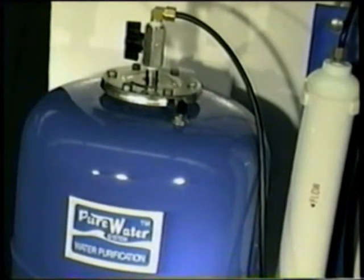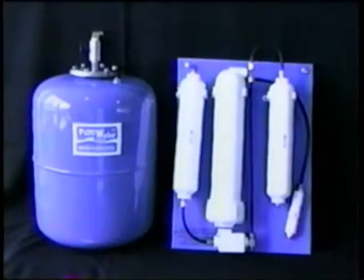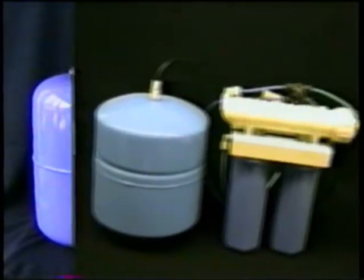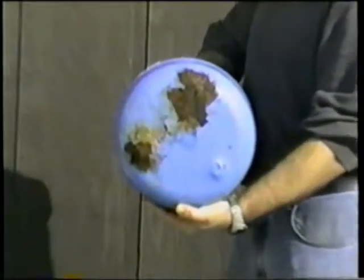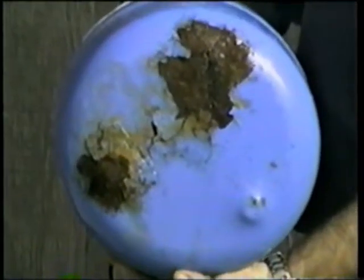Pure Water Systems tanks have a durable baked on epoxy finish, just like a kitchen sink. They're designed to give you a lifetime of trouble-free service. Generic system tanks almost always have less durable spray painted finishes which are more likely to scratch, pit, and rust, shortening the life of the generics like this one sold in discount stores.